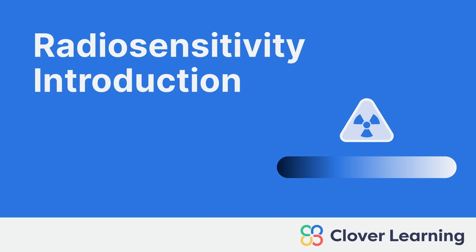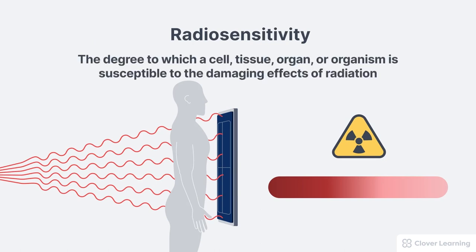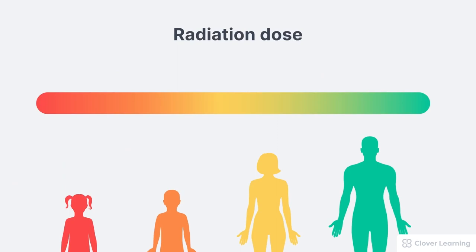Hey everybody, welcome back. This lesson is about radiosensitivity. Radiosensitivity describes the degree to which a cell, tissue, organ, or organism is susceptible to the damaging effects of radiation. This is a straightforward idea — radiosensitivity is simply a description of how sensitive something is to radiation. This is a very important concept to understand because it does affect how we practice radiation safety and how we use ionizing radiation.